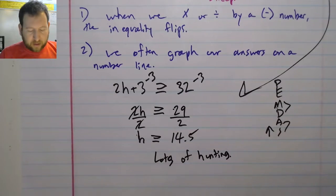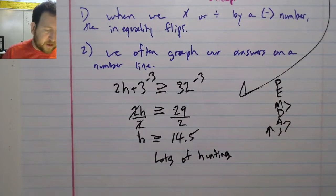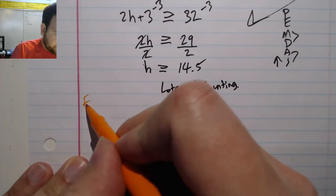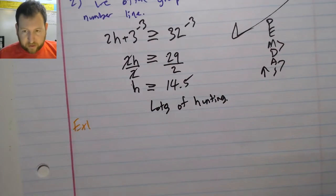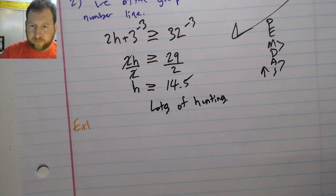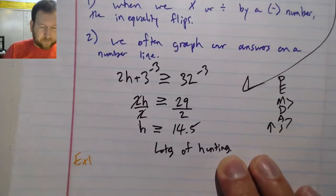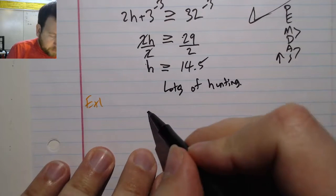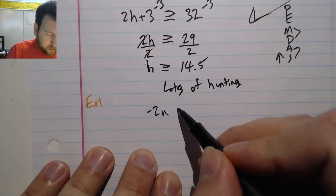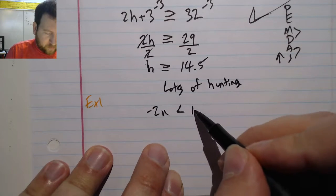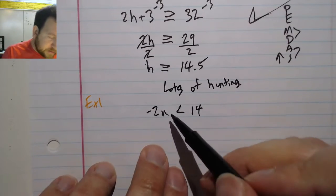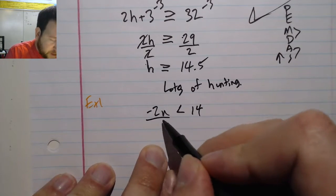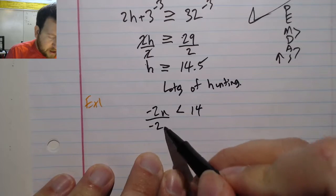Okay, let's take a look at another quick example and this one's going to take into effect our little trick and our little rule we have here. Let's look at example one. This one is going to say negative 2n is less than 14. All right, for this my first step to isolate both sides is to get rid of this negative 2. To get rid of a negative 2, I'm going to divide by a negative 2.